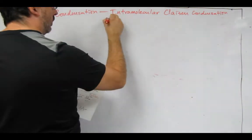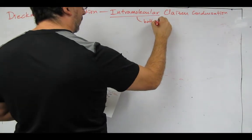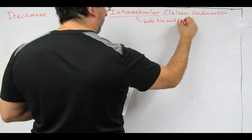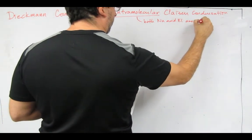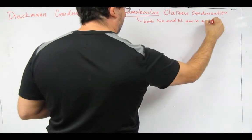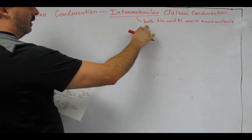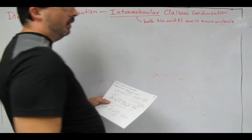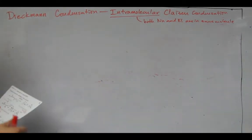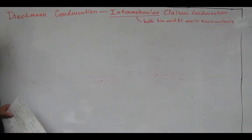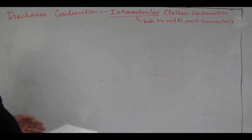Remember this word intramolecular. Both the nucleophile and the electrophile are within the same molecule. We've seen that a Claisen reaction is the condensation of two esters. We've seen the self-condensation and the crossed condensation.